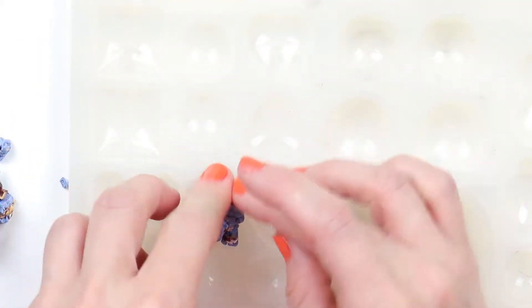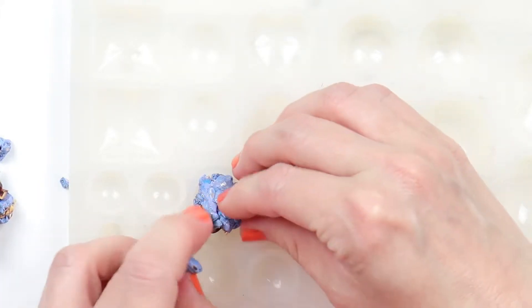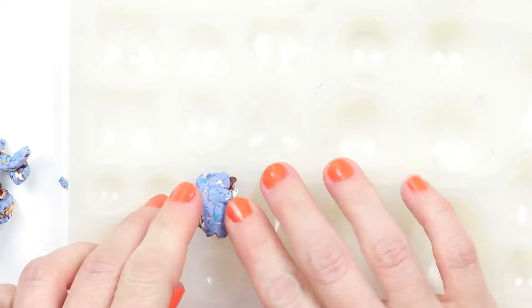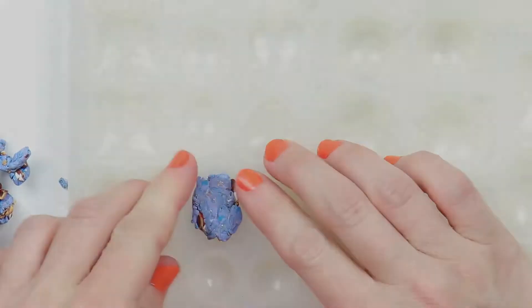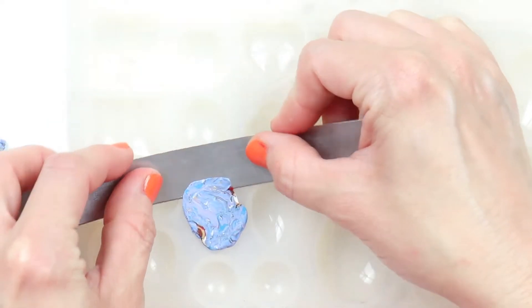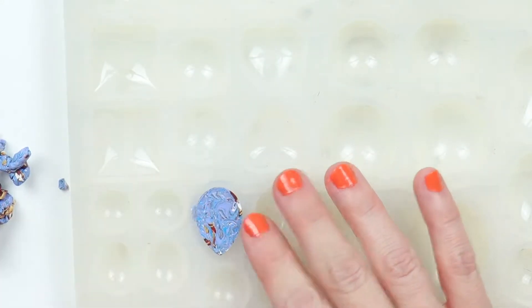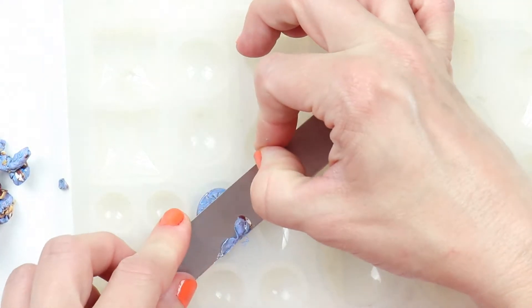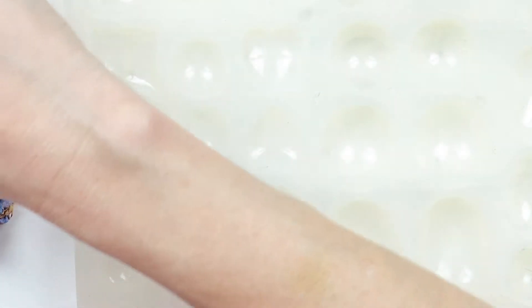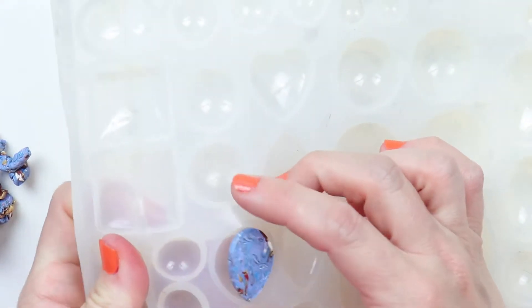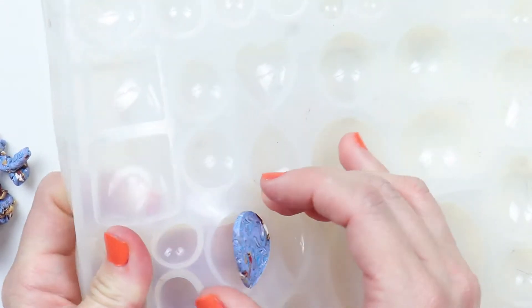Then take a large chunk and put it in your mold and press it down to get all the air bubbles out. Slice off any excess clay. Pop it out and make a second one. After all, earrings aren't the same without a pair.